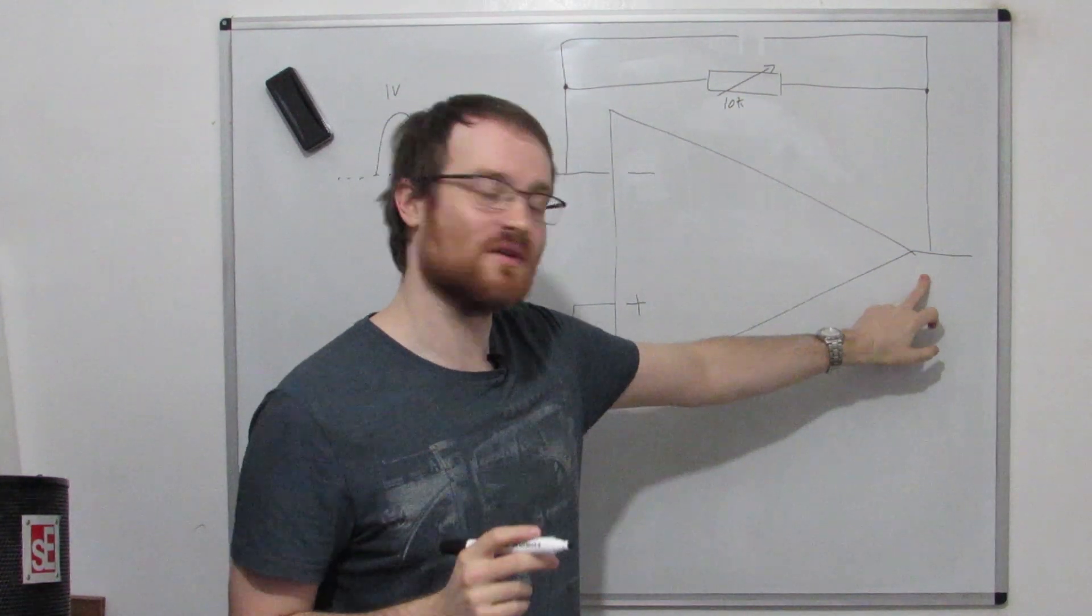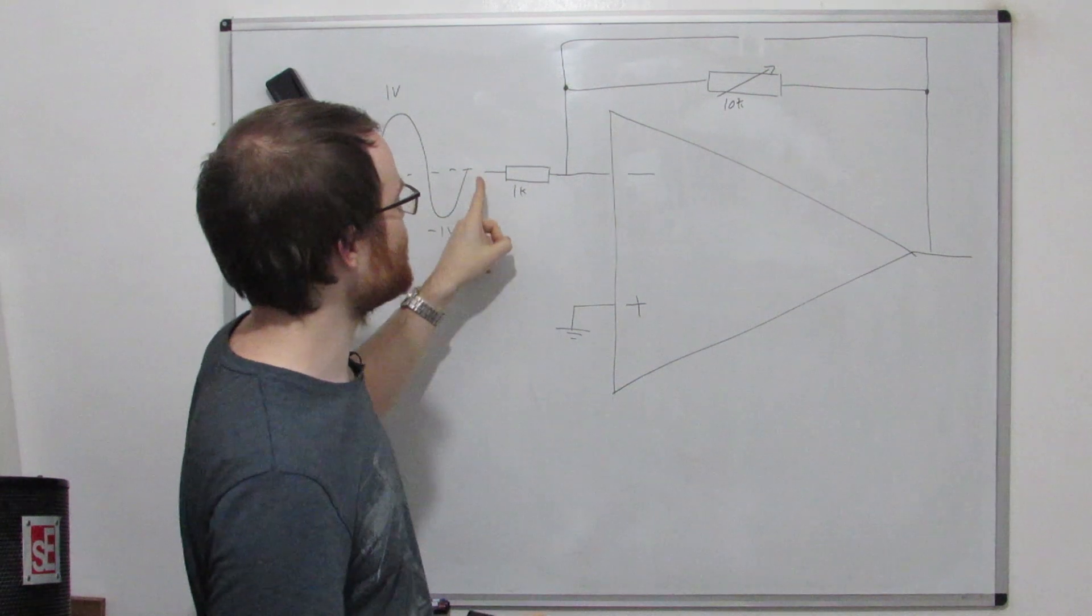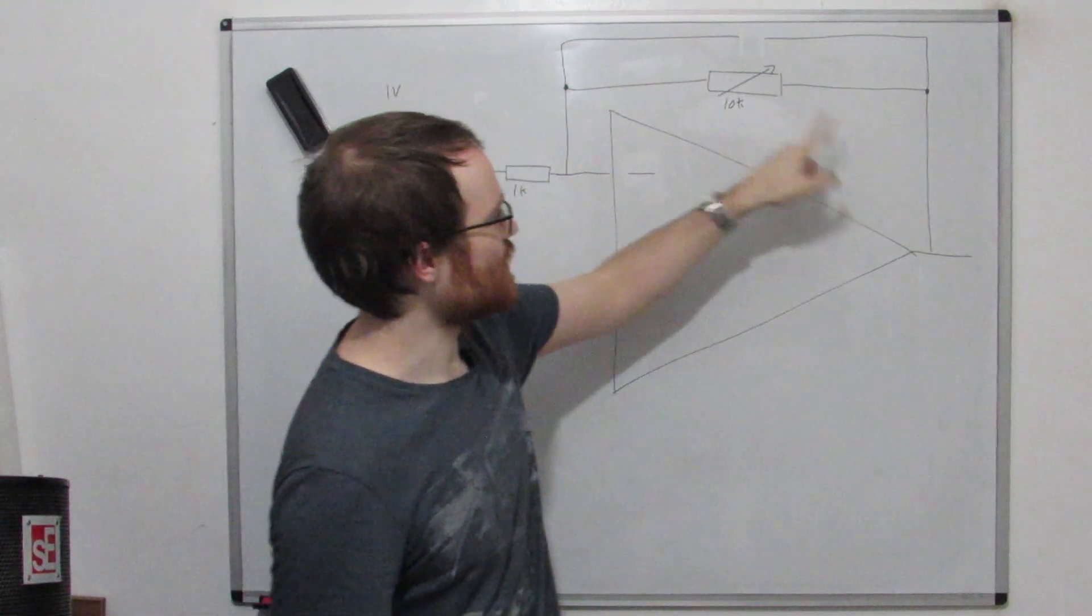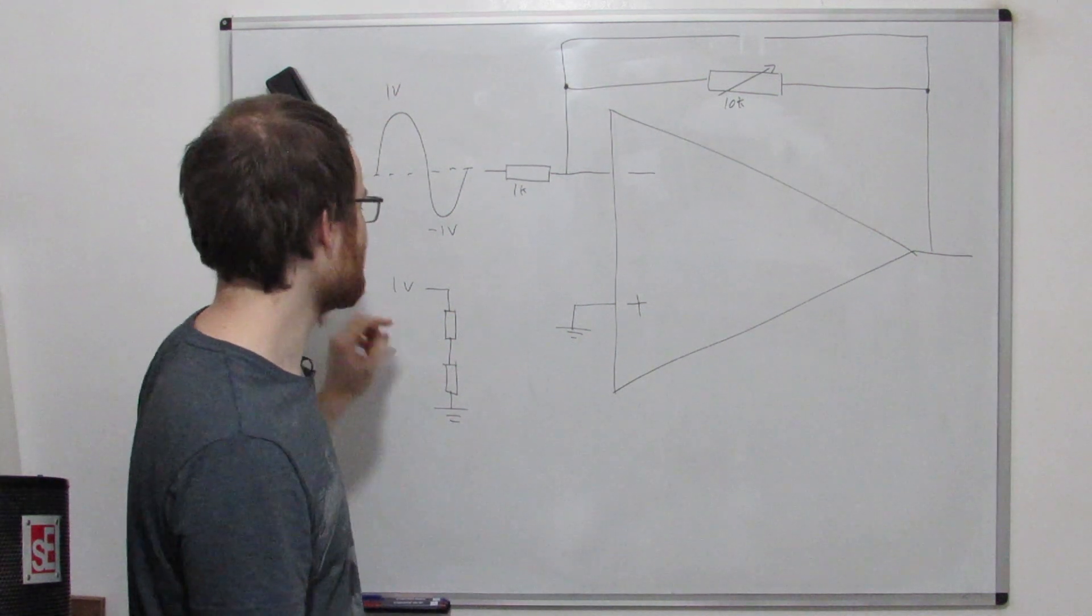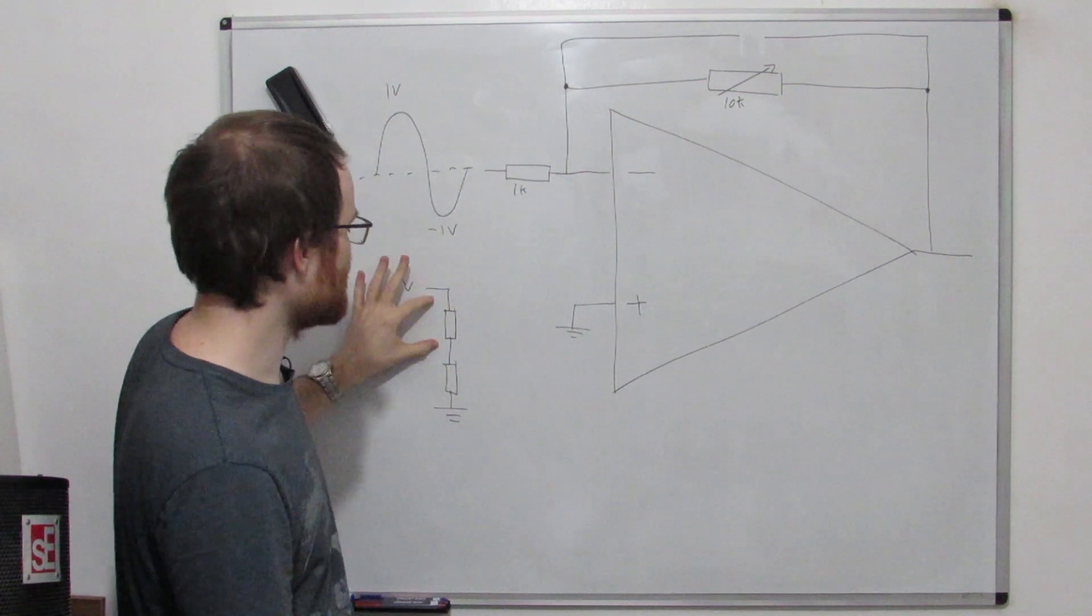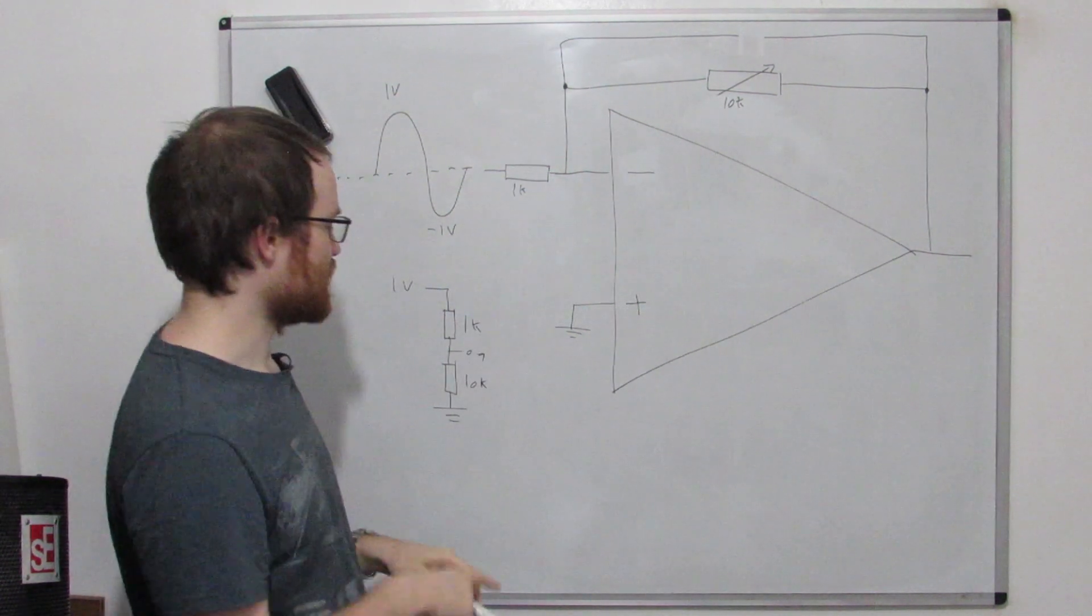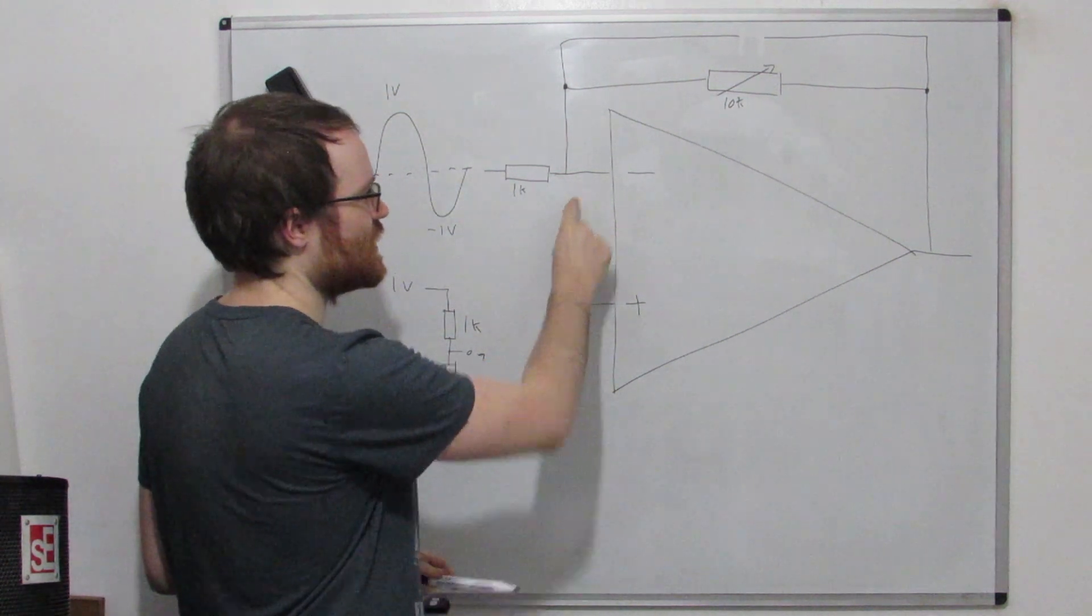If we assume that the output begins at zero volts, what we're doing is we're applying one volt to a voltage divider that looks like this. So let's say that the output is ground, zero volts, so we've got one volt across 1k and then 10k, so we're going to see about 0.9 volts at this inverting input.